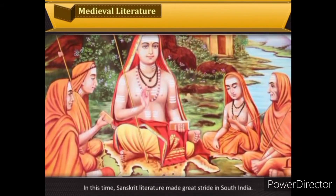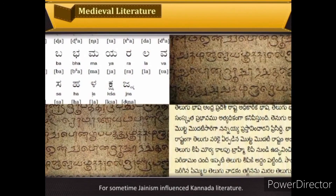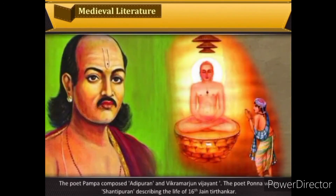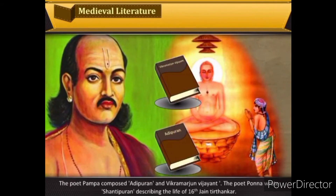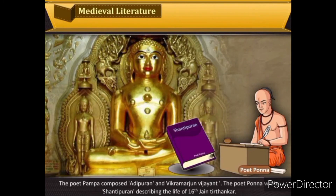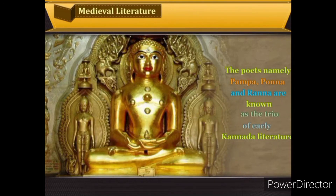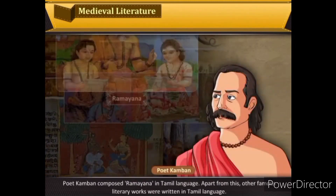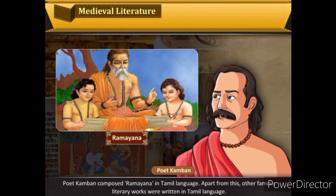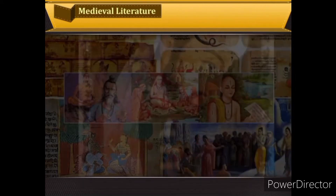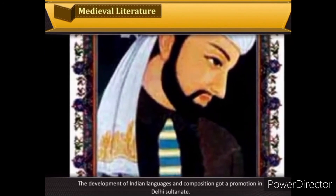In this time, Sanskrit literature made great strides in south India. Jainism influenced Kannada literature — the poet Pampa composed Adipurana and Vikramarjuna Vijaya; the poet Ponna wrote Shantipurana describing the life of the 16th Jain tirthankar; and the poet Ranna composed Ajitnath Purana and Gada Yuddha. Pampa, Ponna and Ranna are known as the trio of early Kannada literature. Poet Kamban composed the Ramayana in Tamil language.